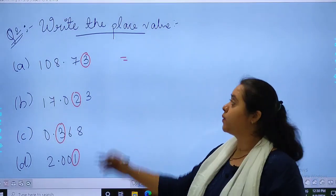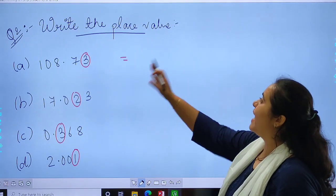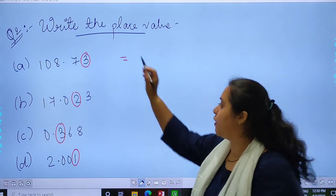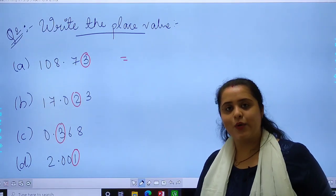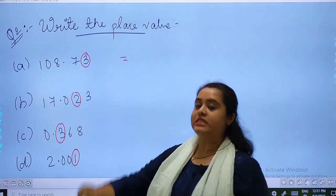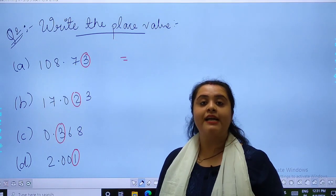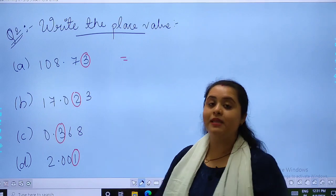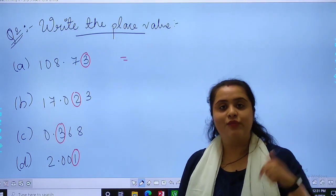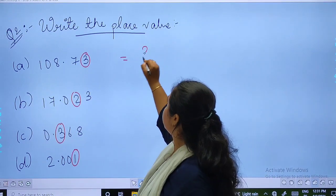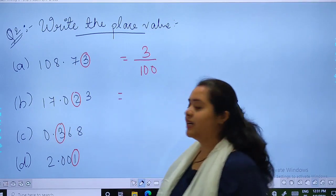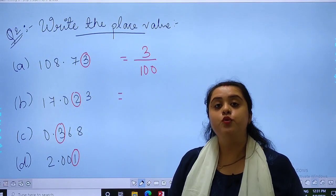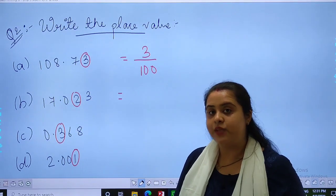So students, let's start with question number 2. That is write the place value. We are supposed to write the place value of the circled digit. Let's start with this. So students, as you can see, 3 is standing at which place? Hundredth. So what will be the place value of 3? 3 upon 100. In the same way, 2 is standing at again hundredth place, so it will be 2 upon 100.